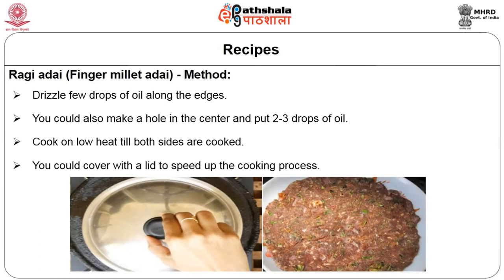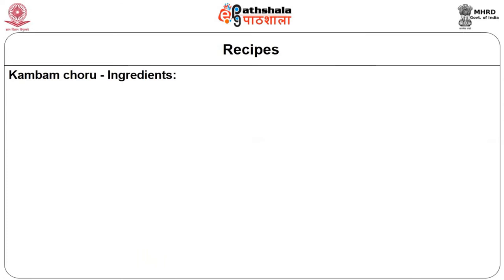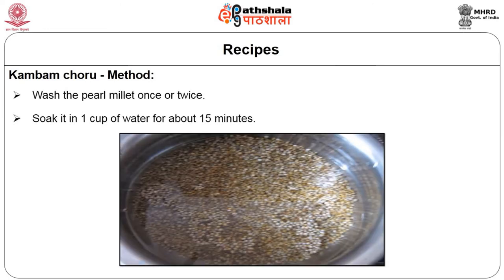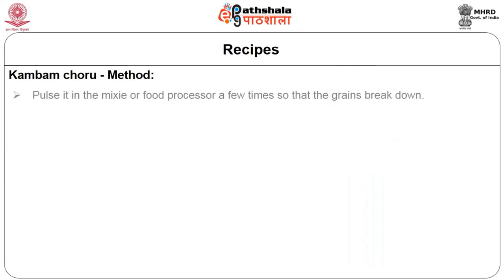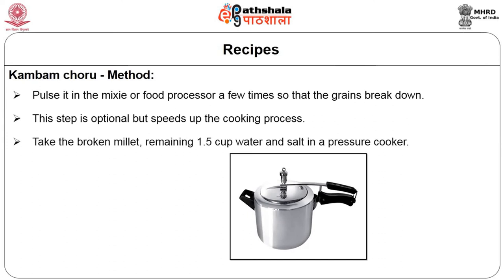The next recipe is Kambam Choru — 'Choru' means it is a staple like rice. It uses pearl millet: 1 cup pearl millet, 2 and a half cups water, salt to taste. Method: wash the pearl millet once or twice, soak it in 1 cup of water for about 15 minutes, then pulse or pulverize it in a mixi or food processor a few times so that the grains break down. This step is optional but speeds up the cooking process. Take the broken millet, the remaining 1.5 cups of water, and salt in a pressure cooker. Cook for 4 to 5 whistles and let the pressure release naturally. It takes a little longer to cook than rice.